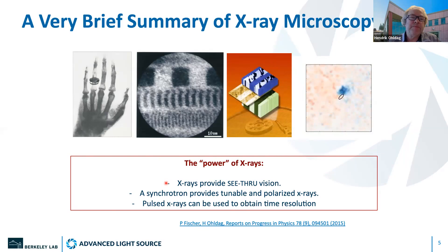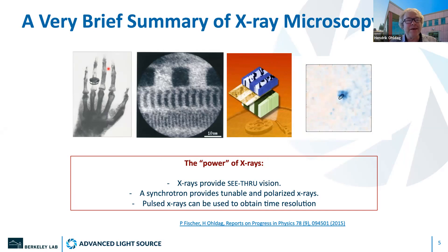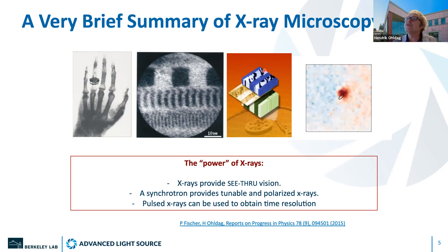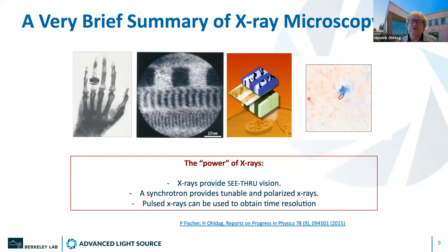X-ray microscopy has been pioneered very early on, already more than 100 years ago by Karl Röntgen, although it wasn't really a microscope in that sense. It's the ability to use X-rays to look through things and discover bone structures in the body. It took about 100 years to take X-ray microscopy or X-ray imaging to the next level and employ it onto magnetic systems. The second image is essentially a domain structure from a hard drive taken with a PEEM microscope at the Advanced Light Source in 1995.